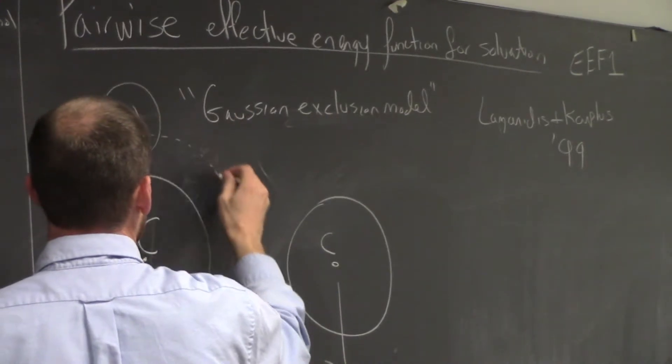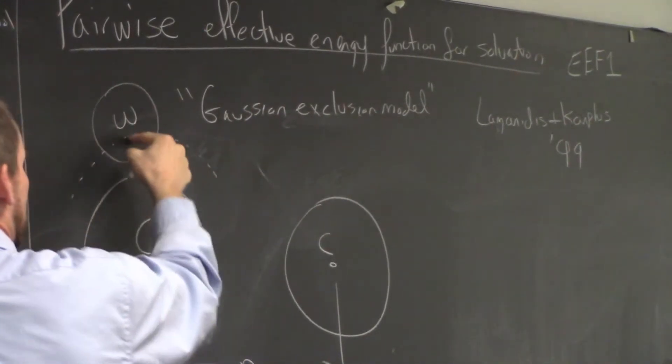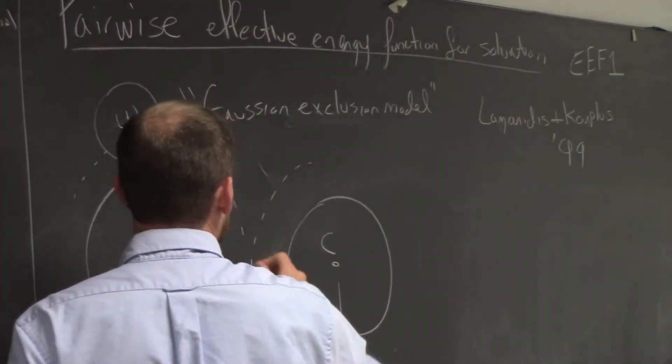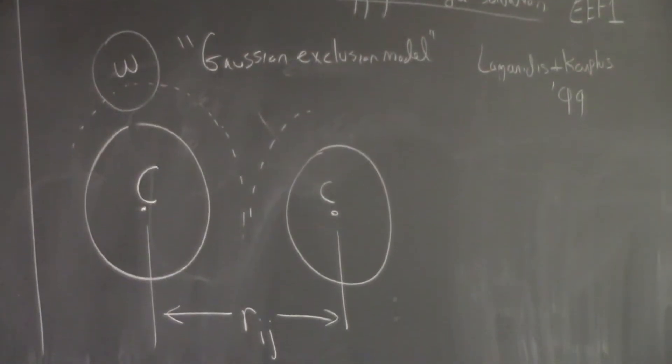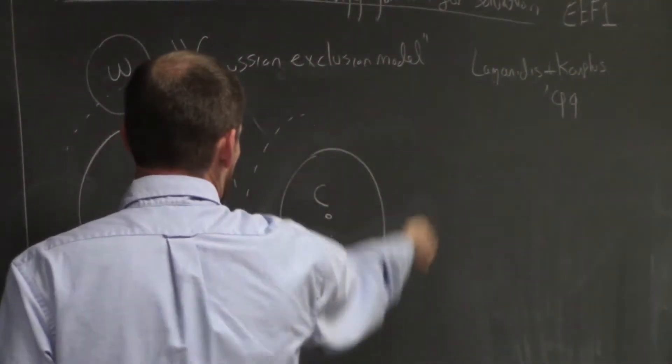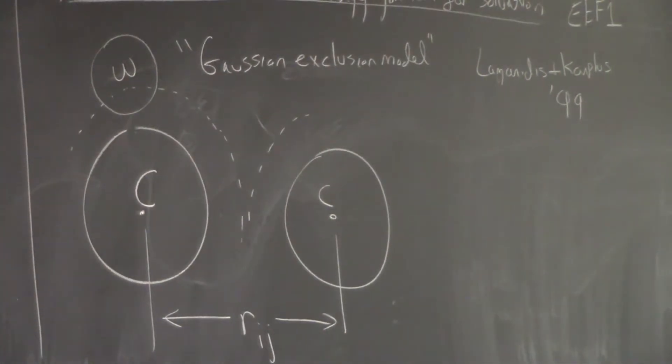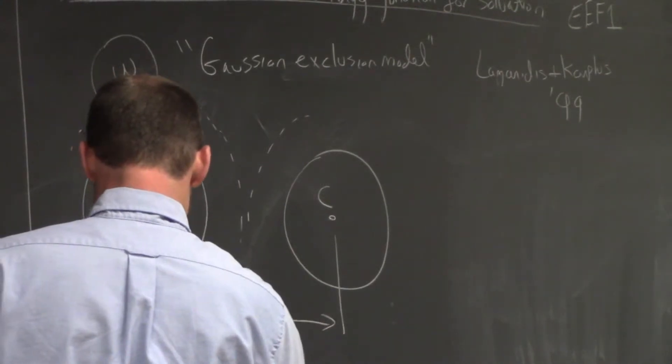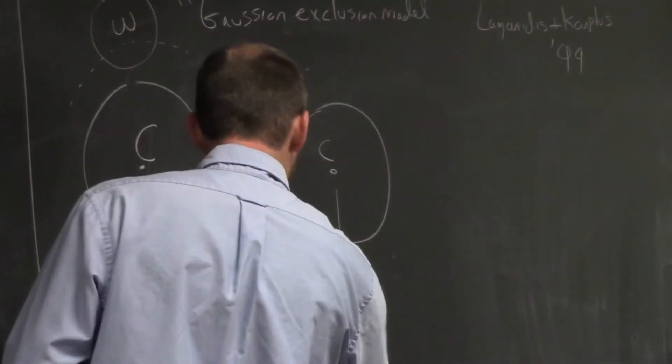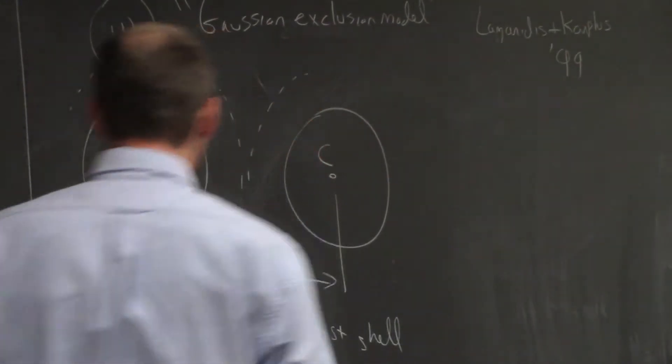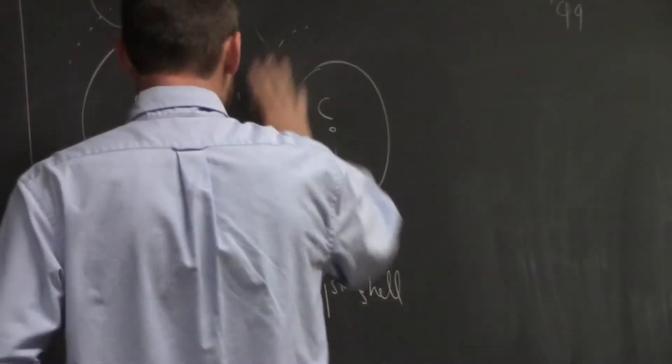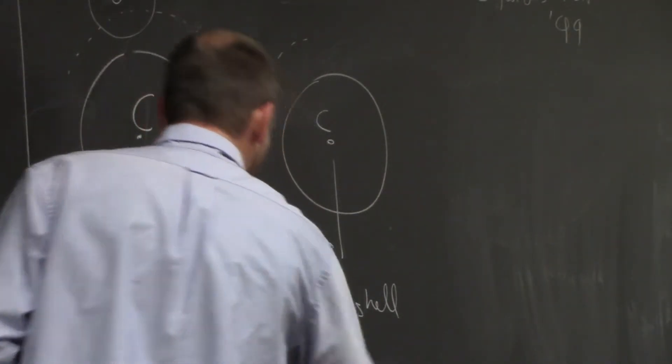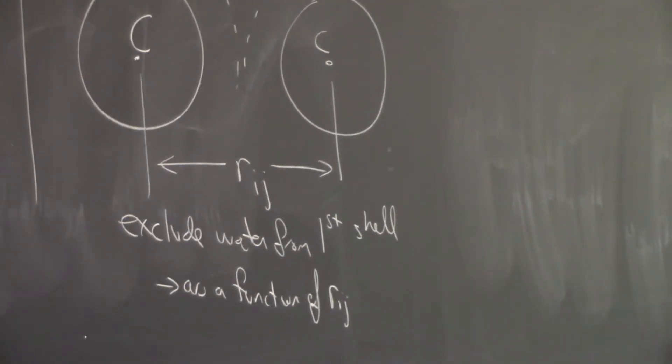So like in the surface area model, consider that there's waters outside. Now they're not just rolling around the surface, but they're in different places. And let's see, you can get this water molecule, the center of this water molecule can get up to the radius of the carbon atom plus the radius of the water molecule is how close it can get. And as these two carbons get closer, you can get up to a point where you completely exclude waters from between them. And so that creates a depletion force where you'll have waters on the outside but nothing on the inside that's going to pull things together. So we're going to exclude water from the first shell. So depending on how close these are, this is going to exclude water from interacting with the atoms. And this is going to happen as a function of rij, the distance between those two atoms. And that's where the math is going to be based on for this model.